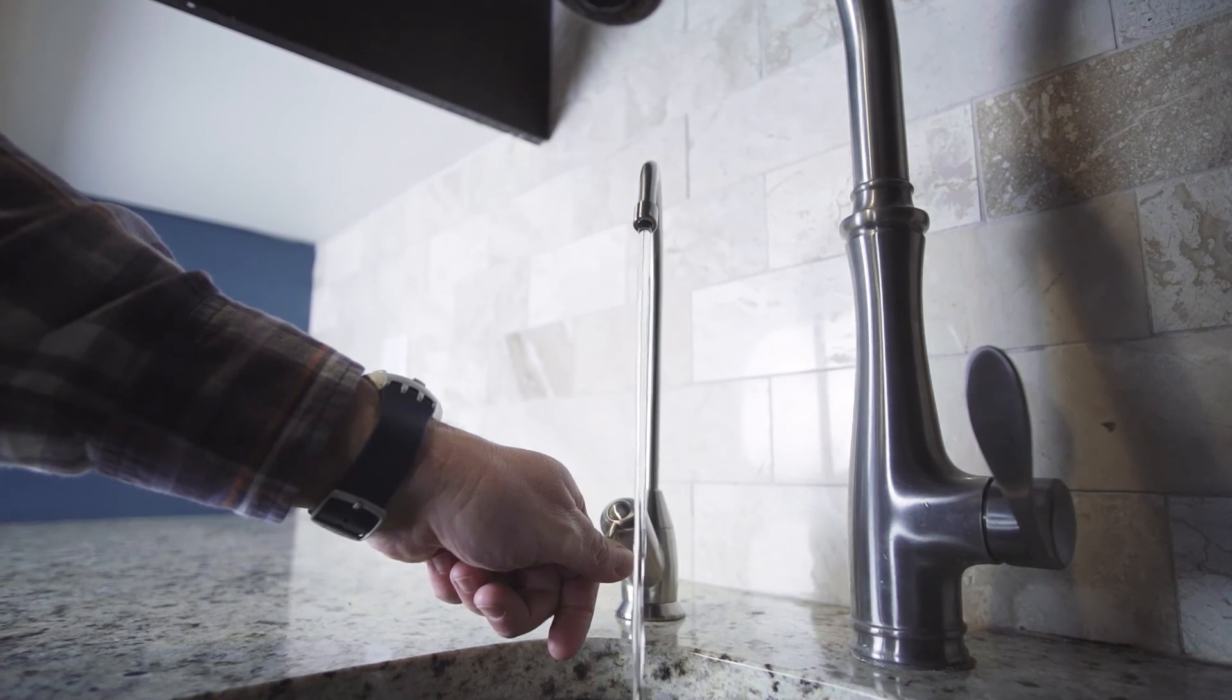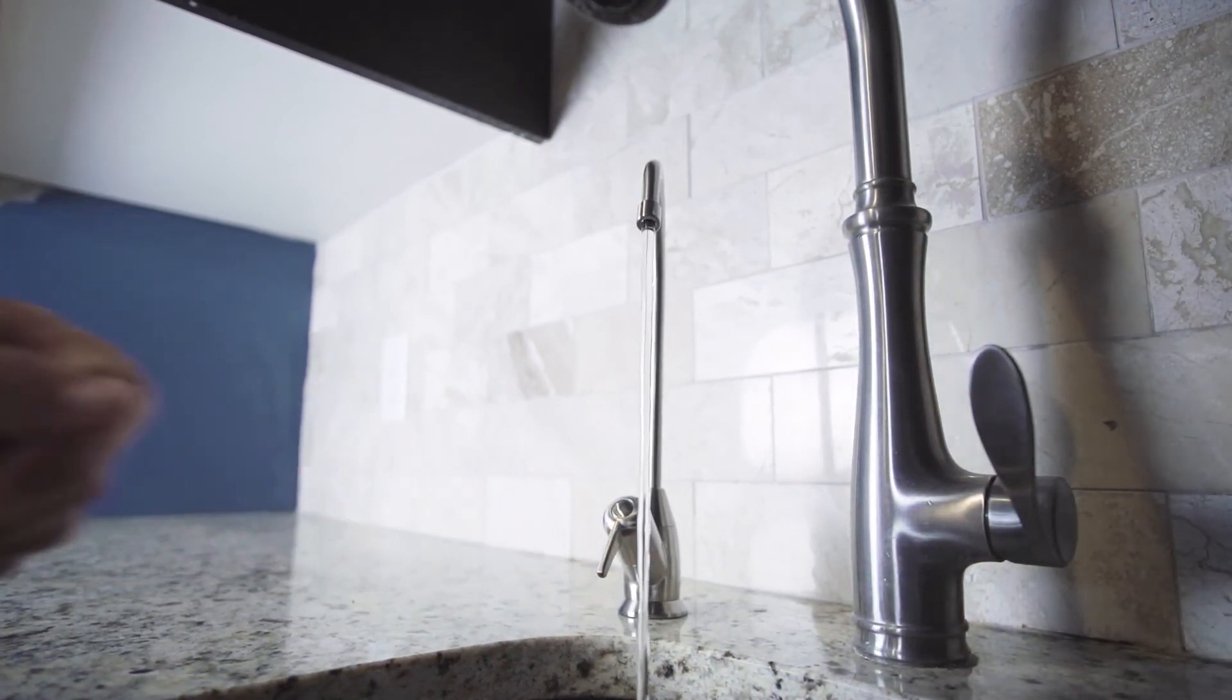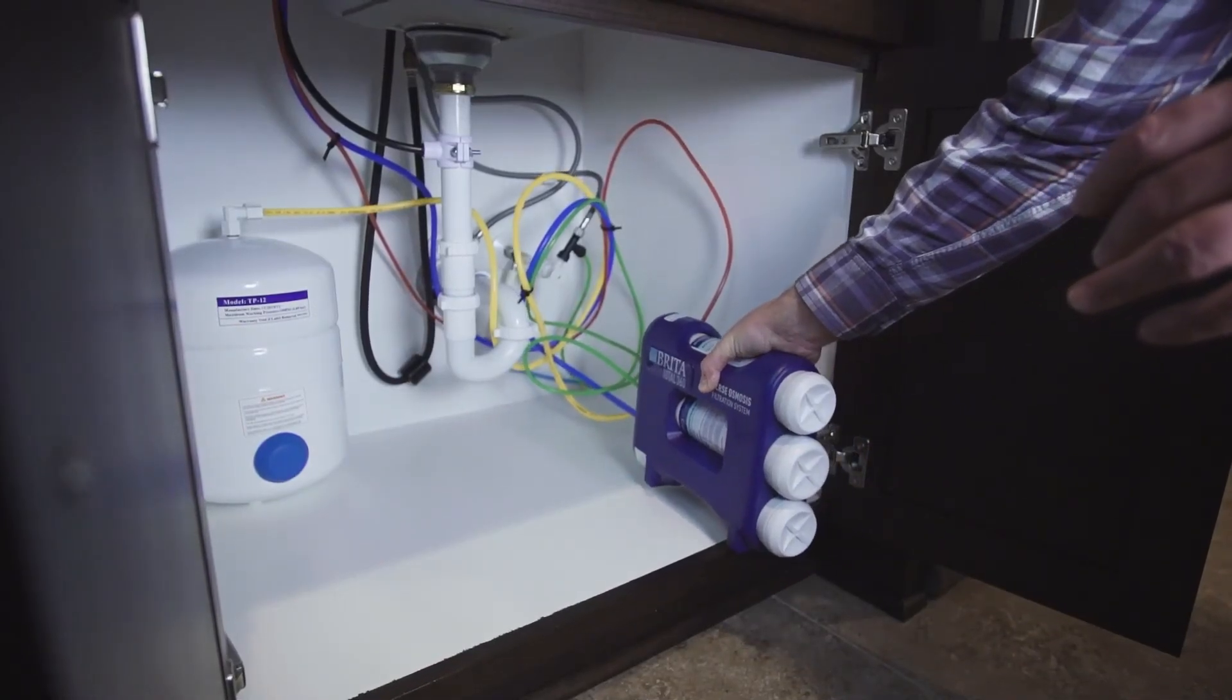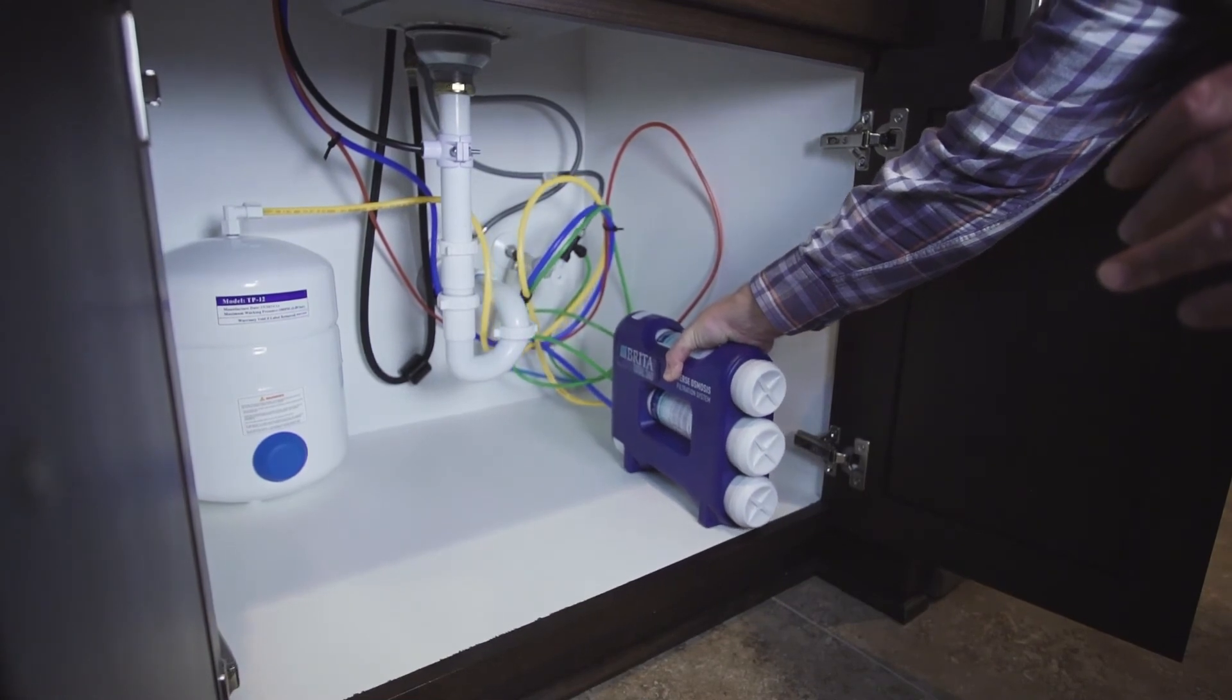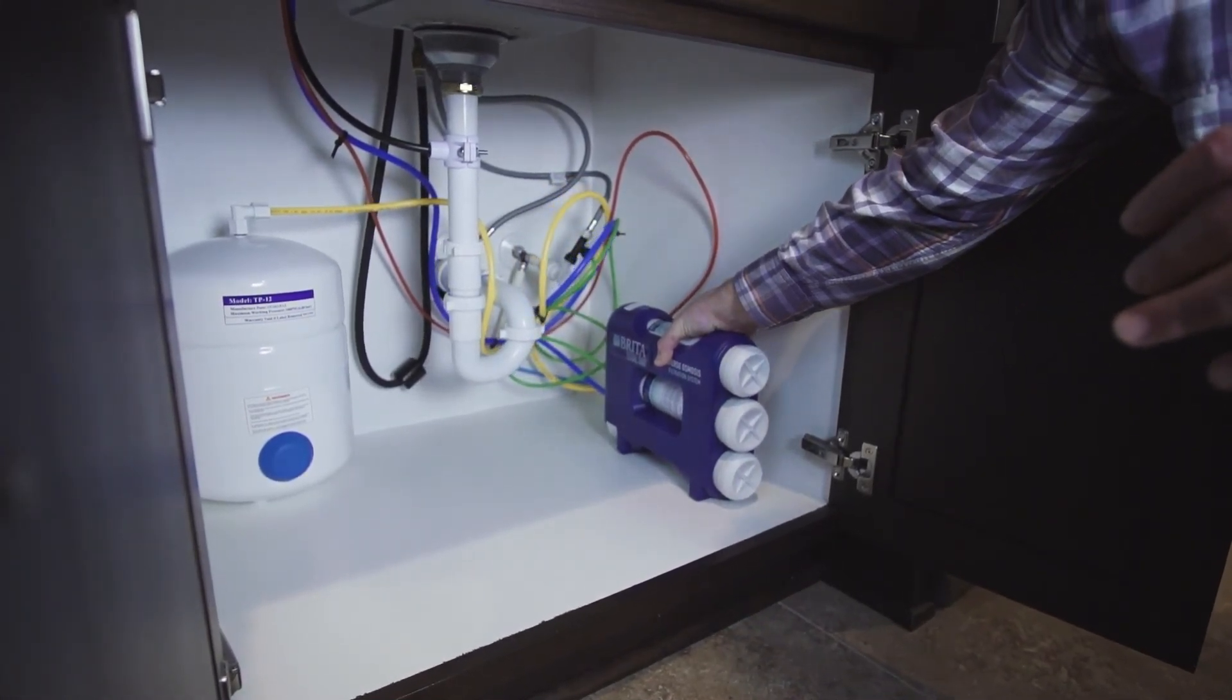And finally, you'll need to purge your RO system by simply opening the RO faucet and letting the water run for 24 hours. Water will flow at a slow trickle initially and then pick up speed as the purging is complete. Once your system is purged, you're ready to enjoy pure clean water.